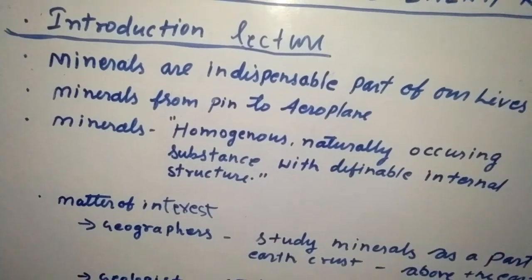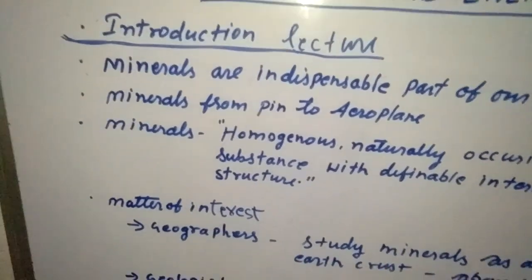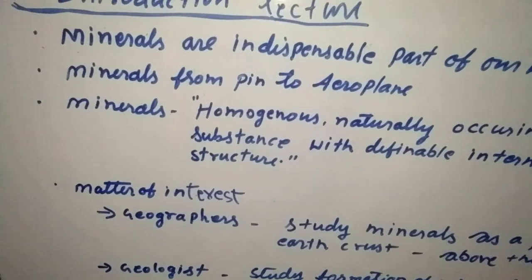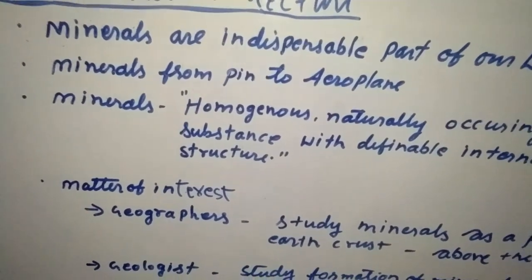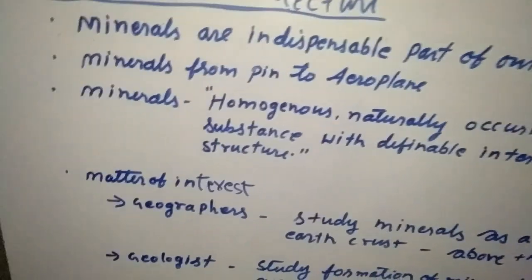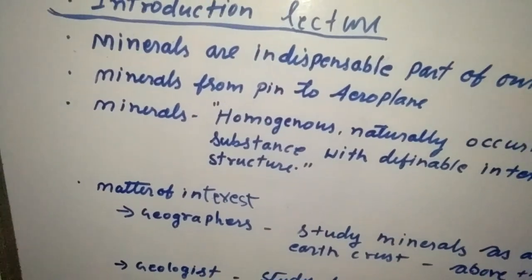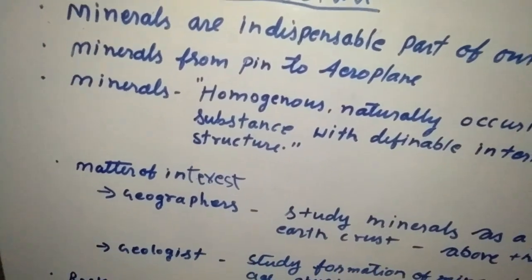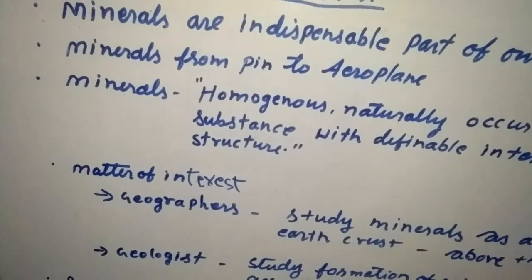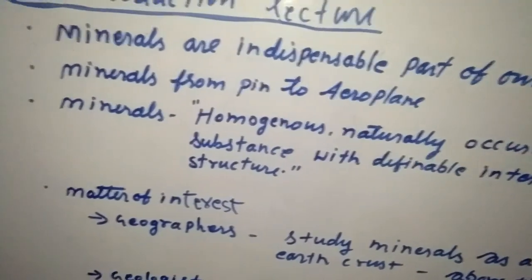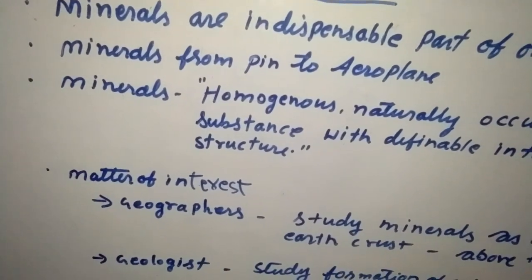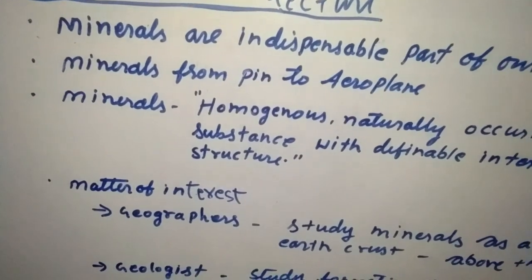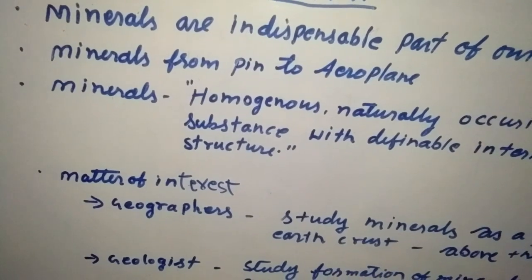Now, there is a definition of minerals: 'Homogeneous, naturally occurring substance with definable internal structure.' That is called a mineral. Minerals are homogeneous — meaning uniform. All their internal structures are very definable. There is a theoretical framework to describe and define minerals. All minerals are found in a uniform form in nature, and their internal structure is definable.